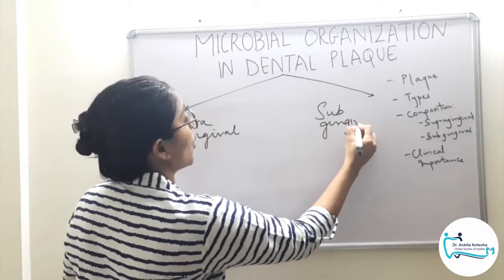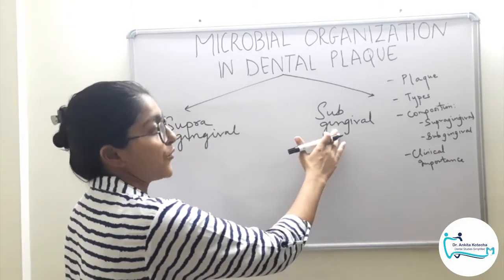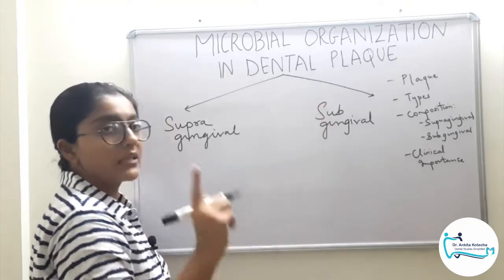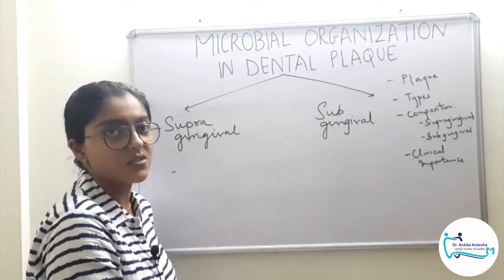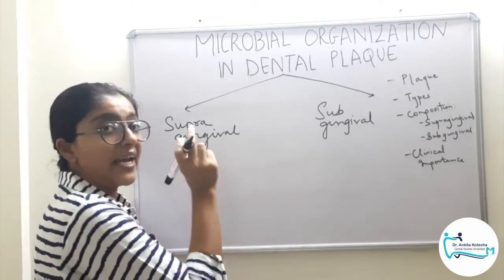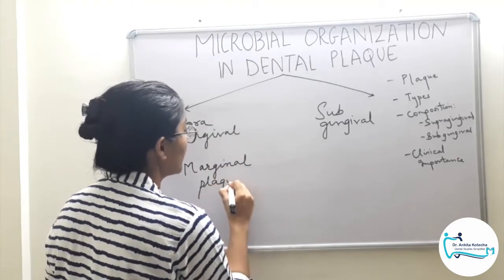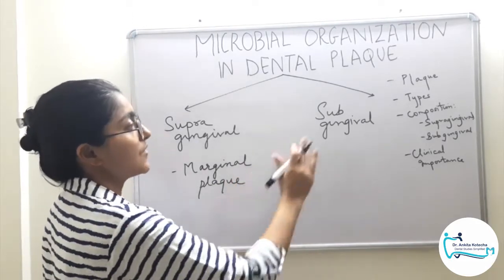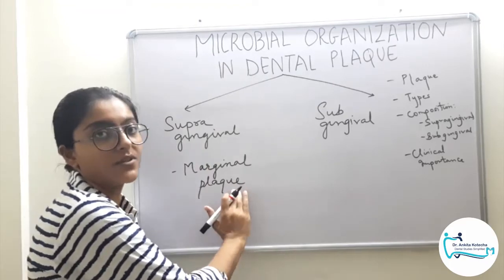Plaque present on the tooth surface above or at the gingival margin is called supragingival plaque. Plaque present below the gingival margin, between the tooth and the pocket epithelium or junctional epithelium, is called subgingival plaque. Plaque present at the margin is called marginal plaque, and this marginal plaque is responsible for the initiation of the disease gingivitis — specifically marginal gingivitis.